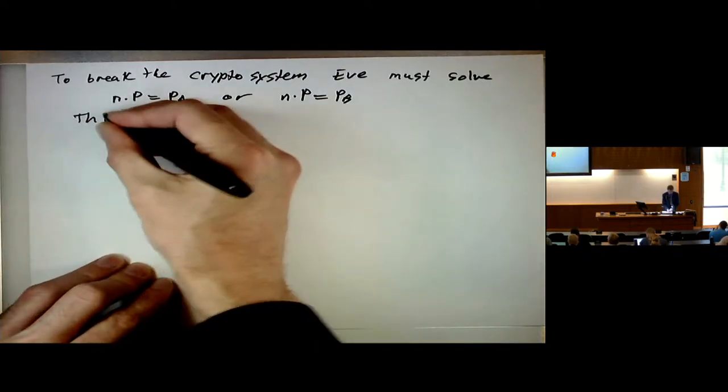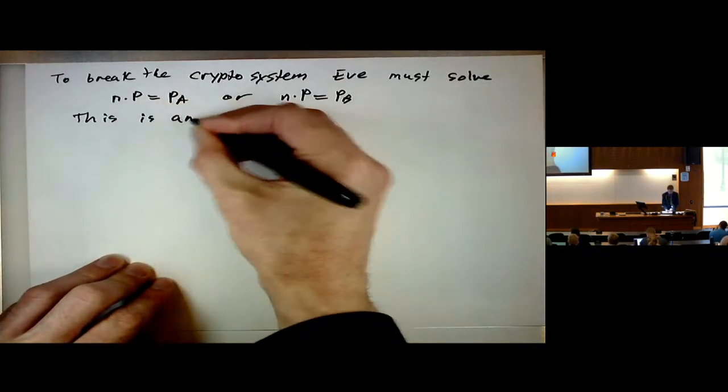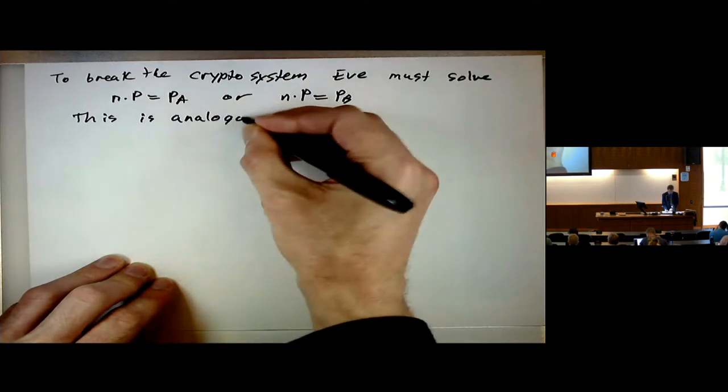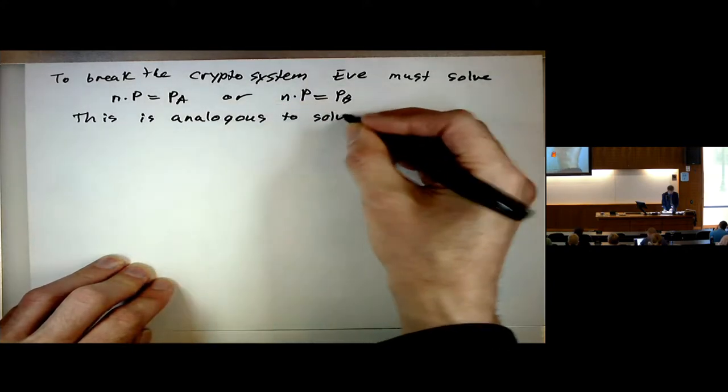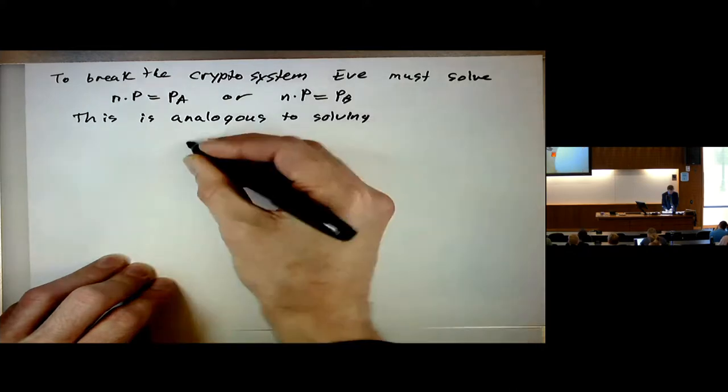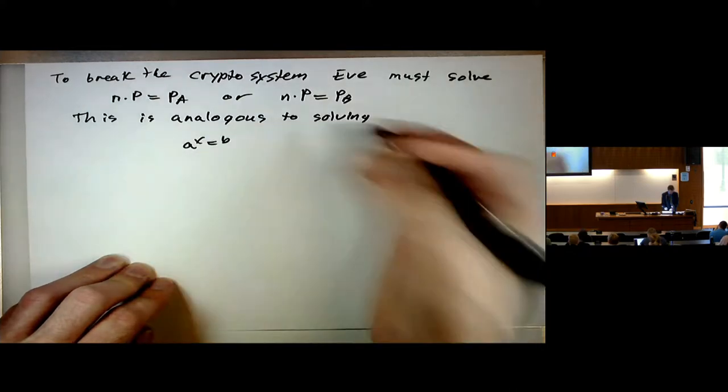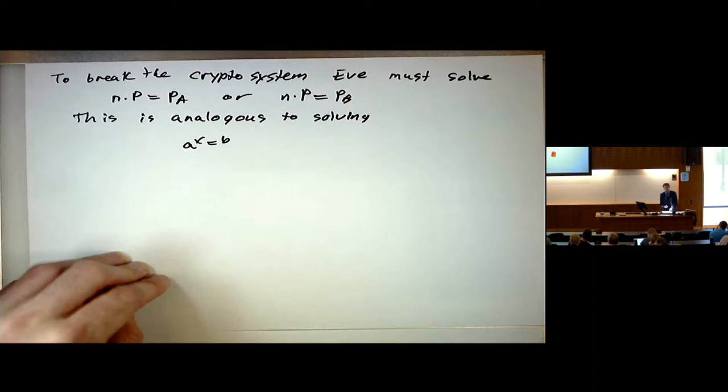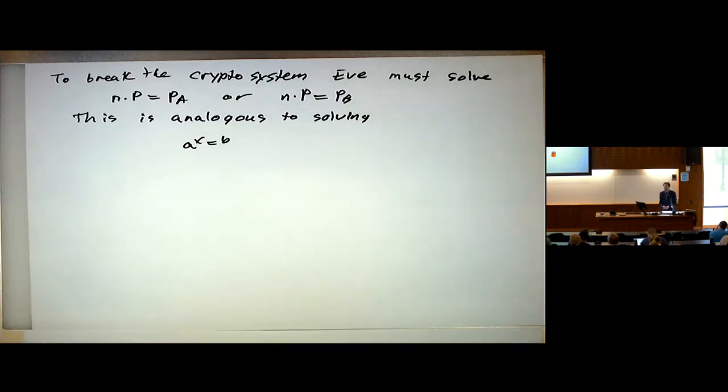You're trying to solve, you're trying to get an unknown exponent if you're trying to break the encryption. To break the cryptosystem, Eve - both those points are known to Eve, but N is not. And we're doing this additively, but if we were doing it multiplicatively, this is analogous to solving a^x = b.